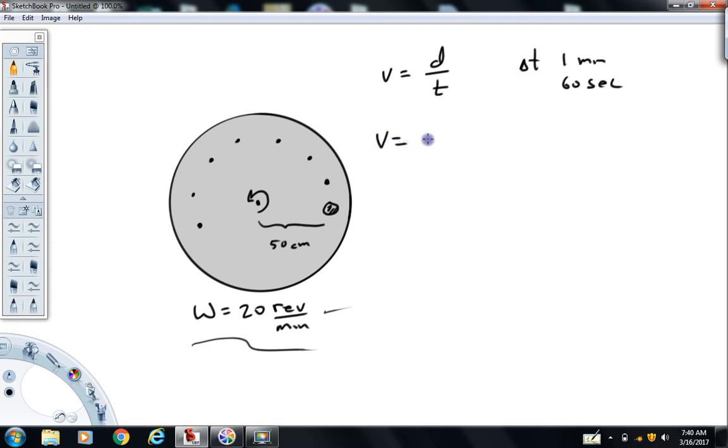So when I calculate the speed, distance over time, this object went around 20 times. And each time it goes around, it travels one circumference of a circle, 2πr. So 2π times, I'm going to go ahead and write this in standard metric. 50 centimeters is 0.5 meters. So 2πr would be 2π times 0.5 meters.